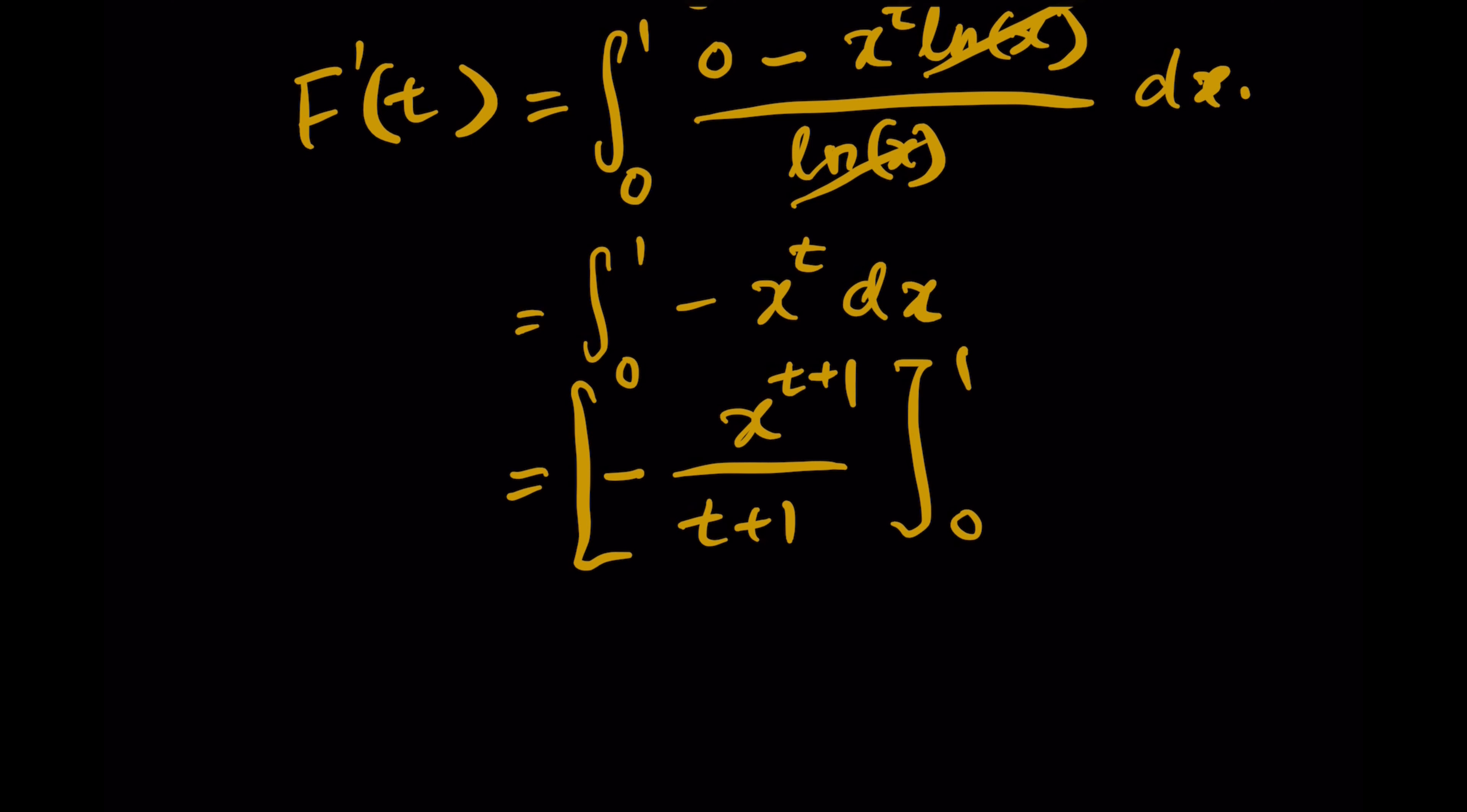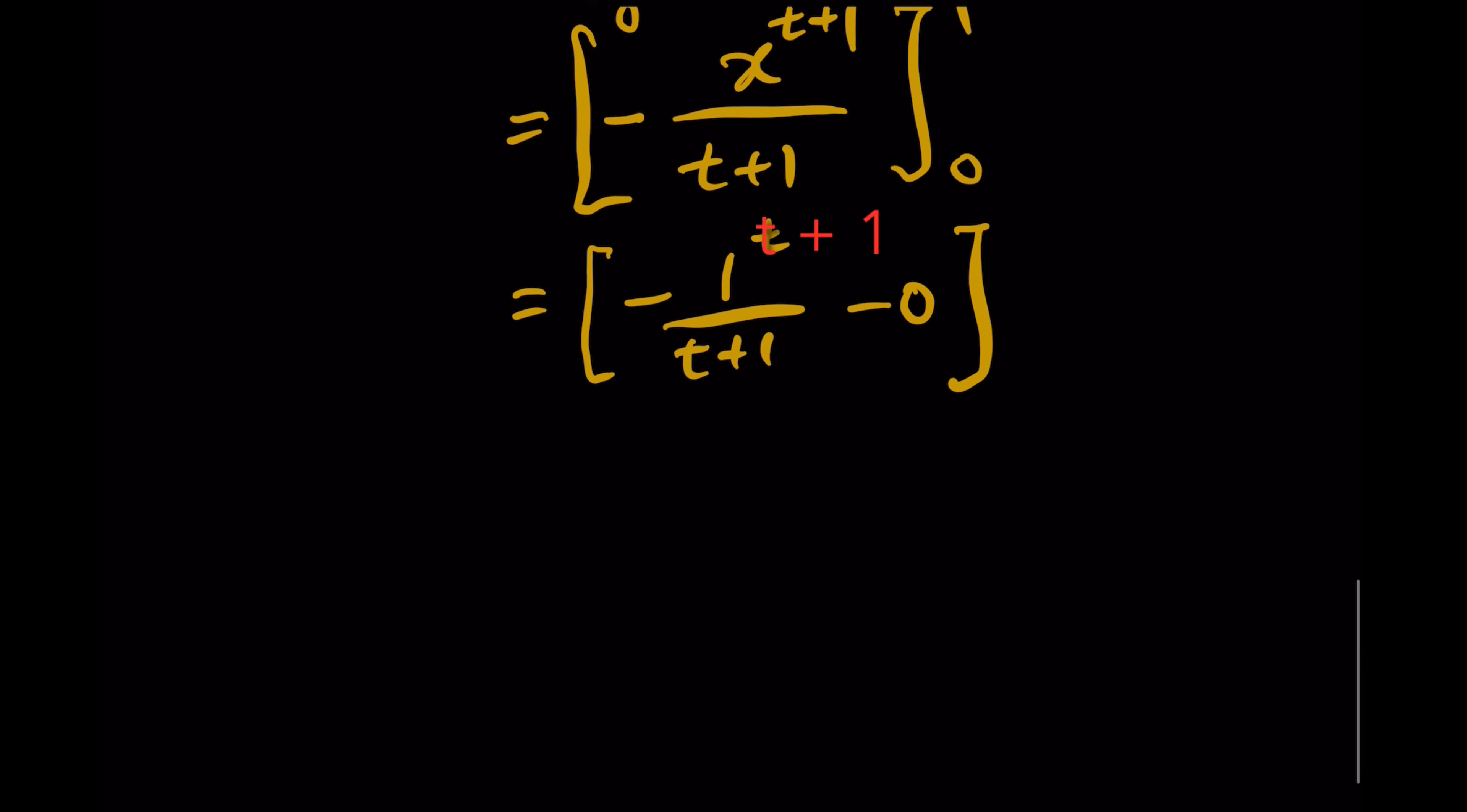Therefore it equals negative 1^(t+1) over (t+1) minus 0. As we know, 1 to the power t is still 1, so we have the answer that F'(t) is actually equals to negative 1 over (t+1).